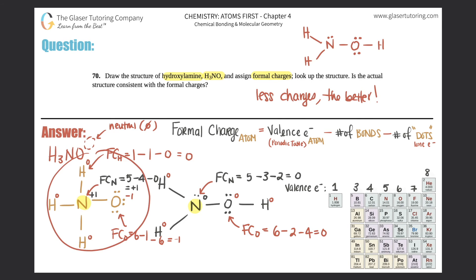So the actual structure is the one on the right, where you have two hydrogens with the nitrogen and one hydrogen with the oxygen. They're just tricking you — they wanted you to draw the left structure because that's usually how students draw it based on how it's written. But when you look it up, it's completely different. You can draw it both ways, but only one is correct, so just be careful.